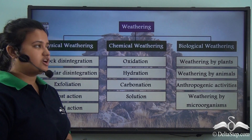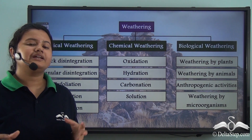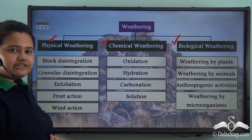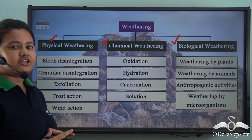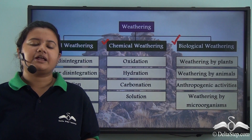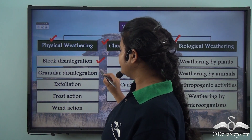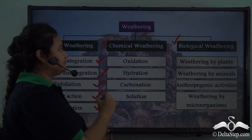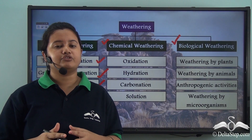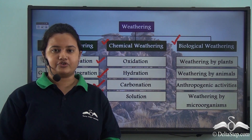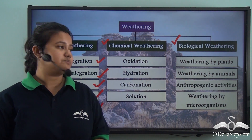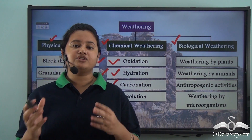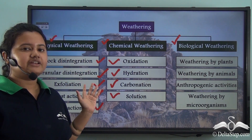Weathering of rocks can be broadly classified into three types: physical weathering, chemical weathering, and biological weathering. Physical weathering refers to the disintegration of rocks without any change in their chemical composition, and it is further classified into block disintegration, granular disintegration, exfoliation, frost action, and wind action. Chemical weathering refers to disintegration of rocks where there is a change in the chemical composition, and it is further classified into oxidation, hydration, carbonation, and solution. You can pause the video and use the iDictionary feature to revise physical and chemical weathering.